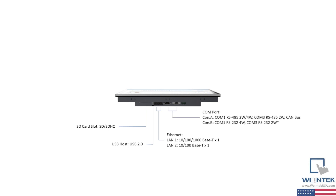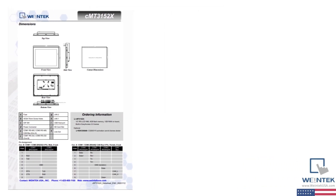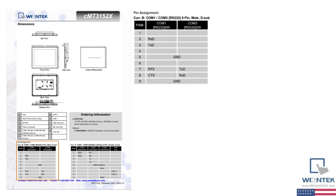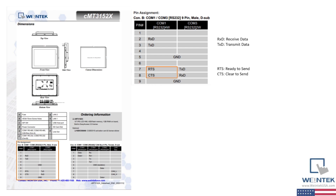The 3152X supports serial communication via an RS-232 and RS-485 interface, RS standing for recommended standard. Both RS-232 and RS-485 have 9 pins, some of which correspond to a method of communication. Within the RS-232 pin assignment, you will see RXD, TXD, RTS, CTS, and GND. RXD and TXD receive data and transmit data respectively, while RTS and CTS stand for ready to send and clear to send, while GND stands for the ground wire.